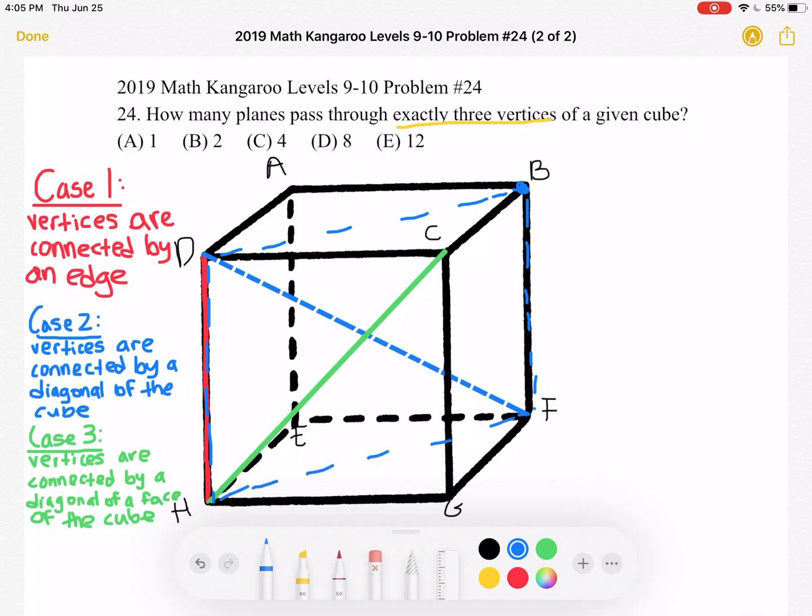So that plane will be going through four vertices and we only want it to be going through three. So again that's not what we want. So now we know that this also doesn't work. You can't have two of the vertices be on the diagonal of the cube.